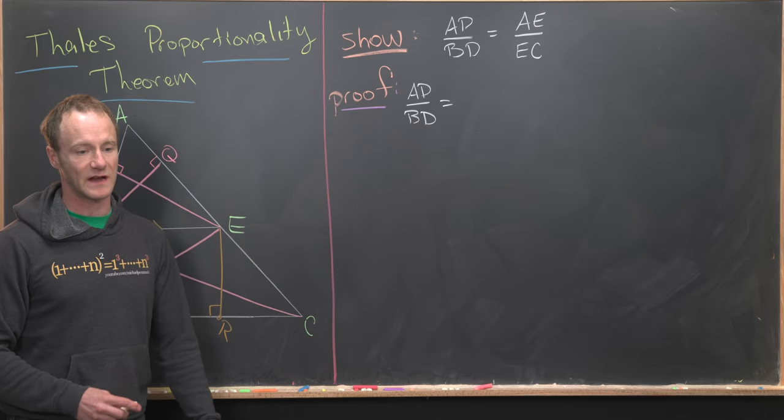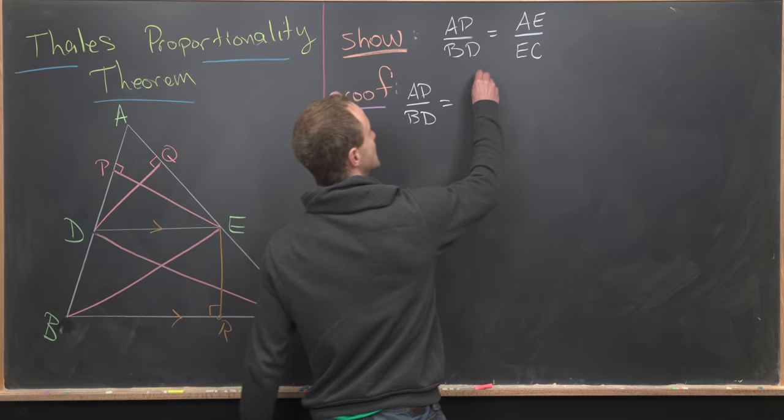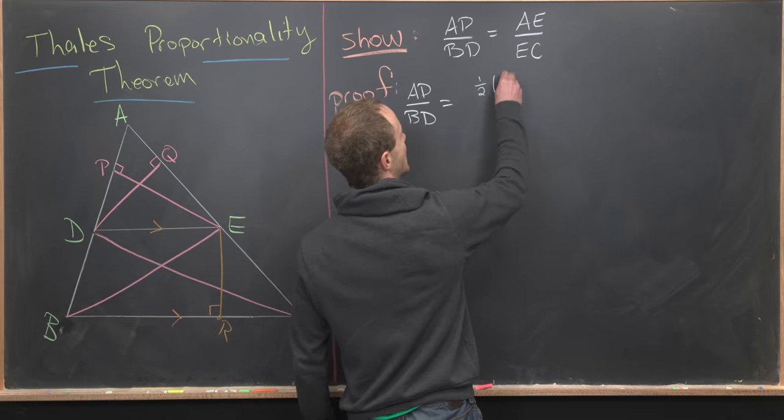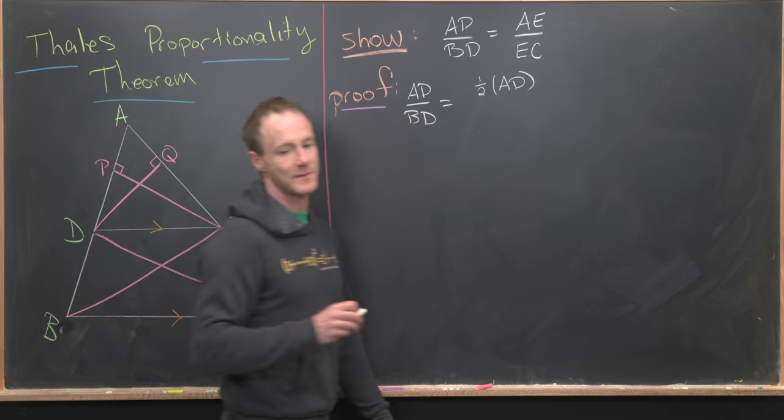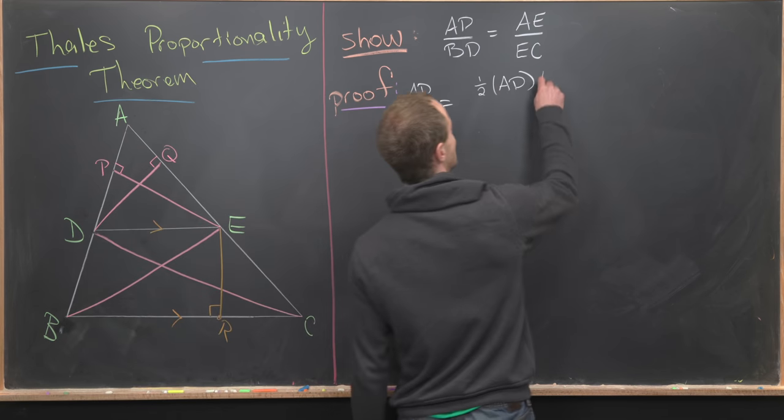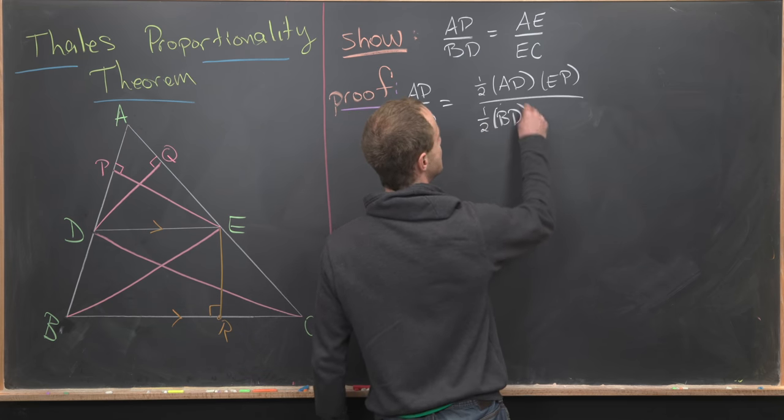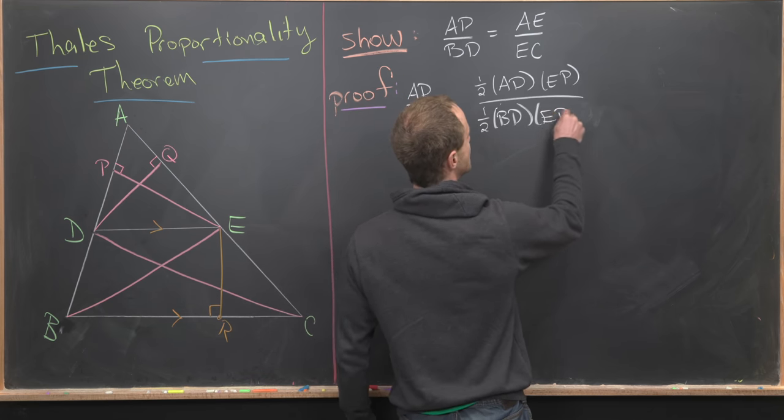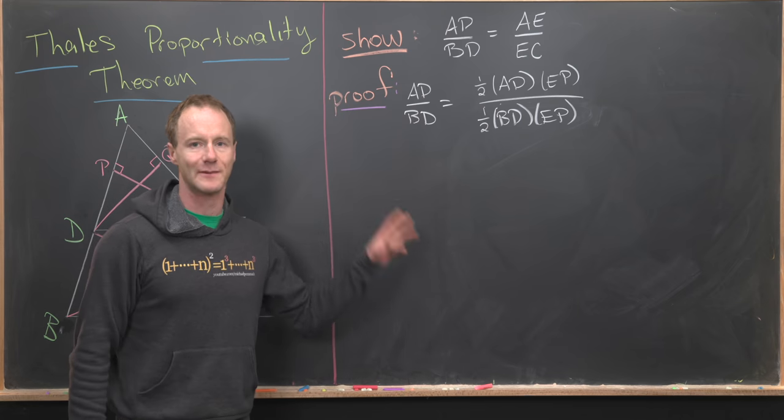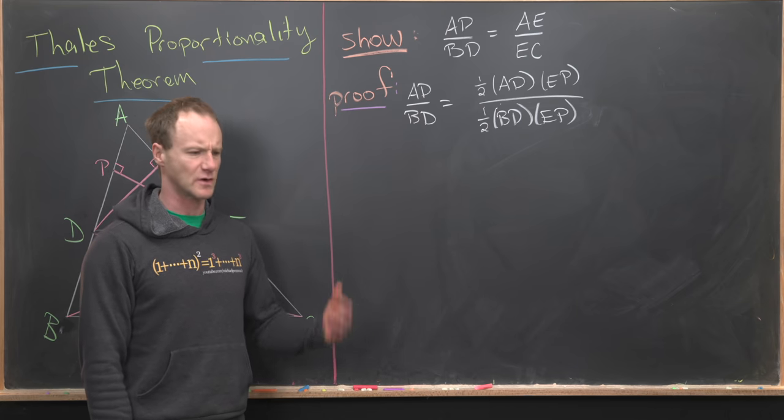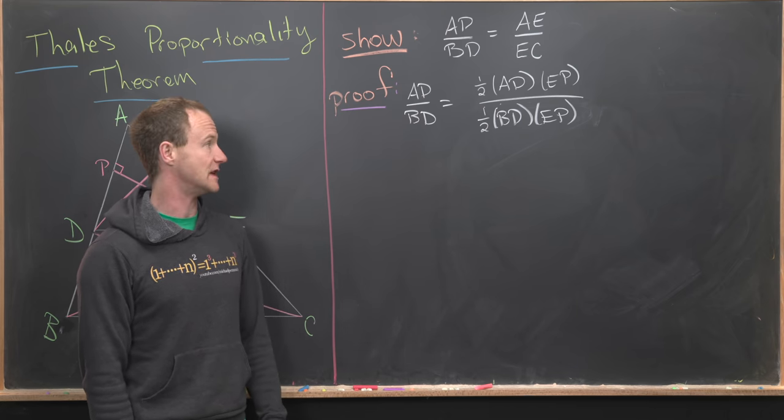Now I'm going to multiply the numerator and denominator by the same thing. I'm going to multiply the numerator by one half, I still have my AD up there, and then multiply by EP. One half, then BD, then EP. So I've multiplied the numerator and denominator by half EP, the length of that line segment EP.